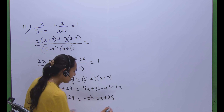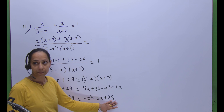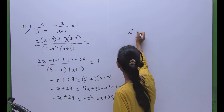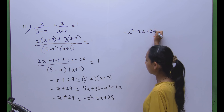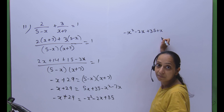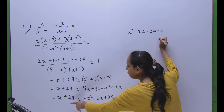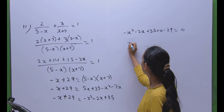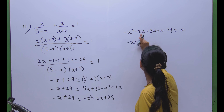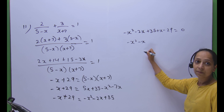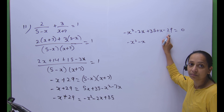Now we take the whole expression to one side to solve the equation. It becomes minus x squared minus 2x plus 35. Moving minus x and 29 to the other side gives plus x and minus 29 equals zero. Combining: minus x squared, minus 2x plus x gives minus x, and 35 minus 29 gives 6.